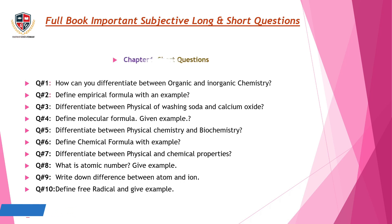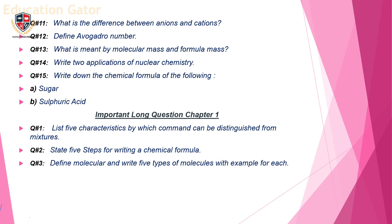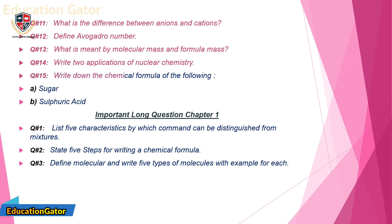Question 11: What is the difference between anions and cations? Question 12: Define Avogadro number. Question 13: What is meant by molecular mass and formula mass? Question 14: Write two applications of nuclear chemistry. Question 15: Write down the chemical formula of the following — sugar, sulfuric acid.